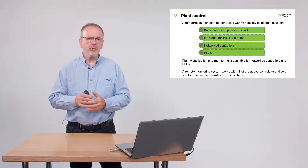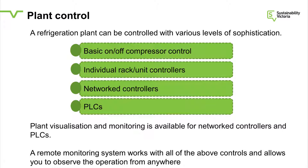The next step up beyond that is what you'll find in a supermarket, where all these controllers talk to each other — that's what we call a network controller. Typically a supermarket will have a screen somewhere in an office where you can see all the individual controllers for the dairy case, the meat case, the cool room, and the freezer room. That will all be on one common display, and they can actually talk to each other. Because it's visualizing what the system is doing, you can quickly pick up a less efficient operation. So that's really where the supermarkets are.